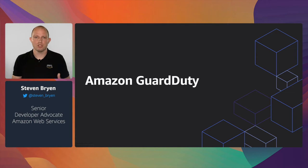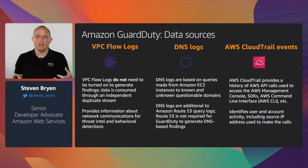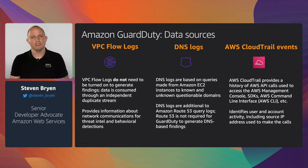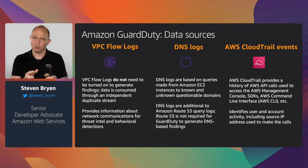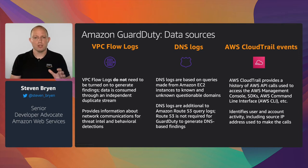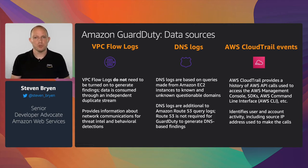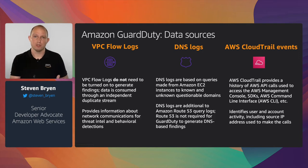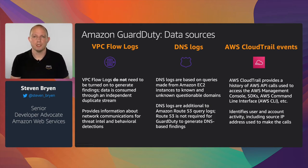Amazon GuardDuty is a service that analyzes logs from three log sources: VPC Flow Logs, CloudTrail logs, and DNS logs — based on queries made from EC2 instances to known and unknown domains, from the DNS resolvers inside your VPCs. A great feature is that you don't have to turn on any of these log sources separately. By enabling GuardDuty, those logs are enabled, but GuardDuty analyzes them in memory and then discards them — no data is actually stored in the GuardDuty service itself.